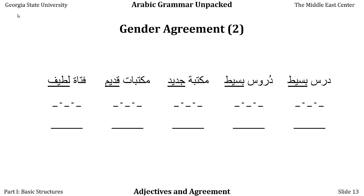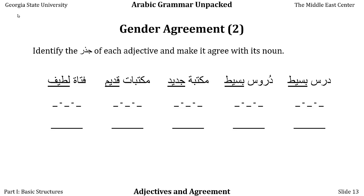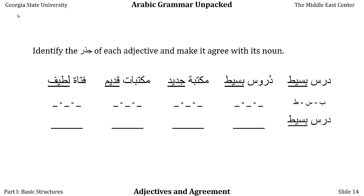Let's try some slightly different examples. Again, we're going to find the jidhr of each adjective and make it agree with its noun. Dars is lesson, basit is simple. We already know dars is a masculine singular noun. The jidhr of basit is ba-sin-ta. Because dars is masculine singular, we don't have to do anything to basit to make it agree. So we have the phrase 'a simple lesson.'